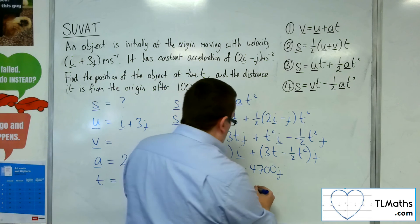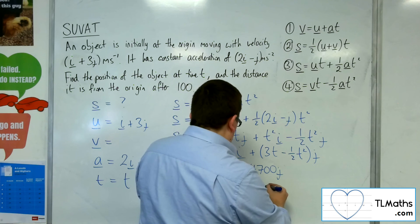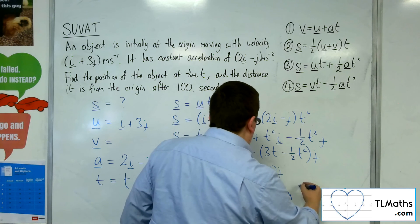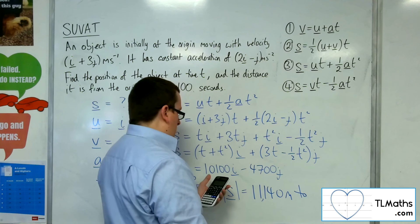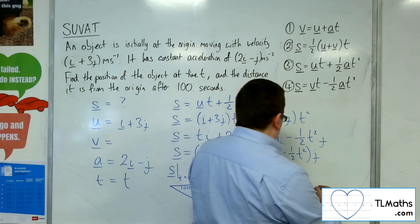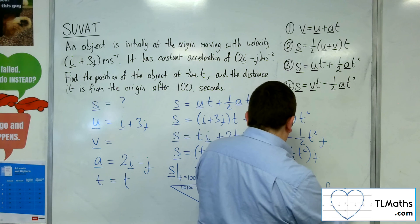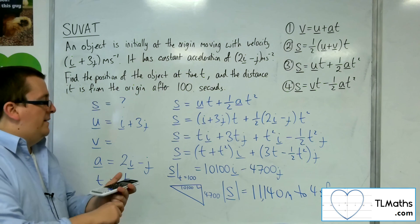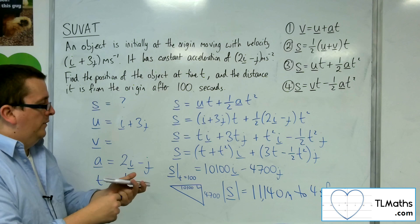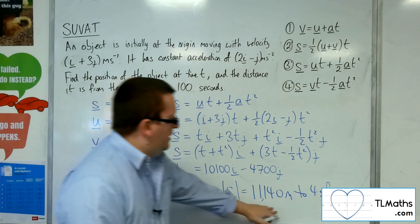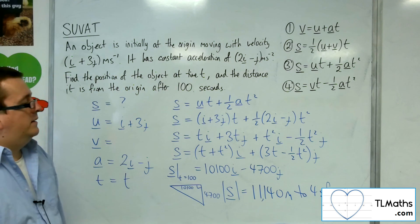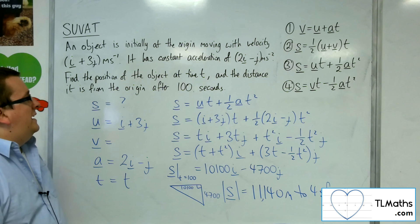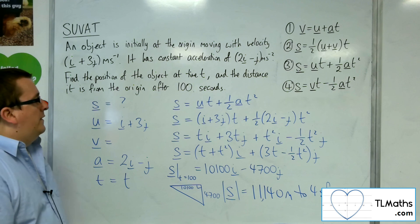And that gets 11,140 metres to 4 sig fig. It would be 11,100 metres to 3 sig fig. But that to the nearest metre is going to be fine. So there is how I can determine the answer to that problem.